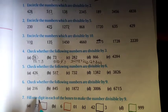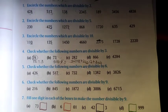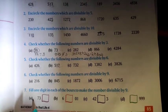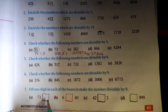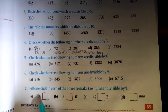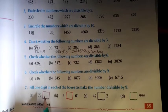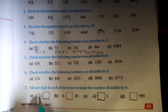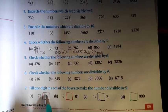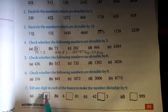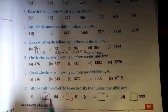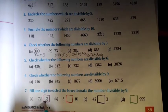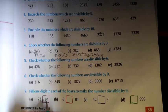The next question is: fill one digit in each of the boxes to make the number divisible by 9. For the number 8 box 7 3: we add the known digits first — 7 plus 3 equals 10. If we add 8 to 10, we get 18, and 18 is divisible by 9. So in this box we can put the number 8.